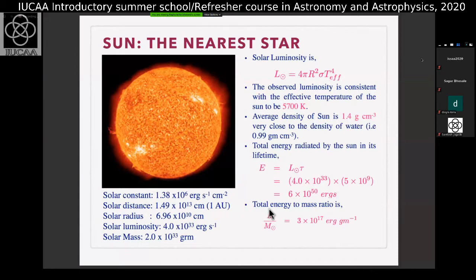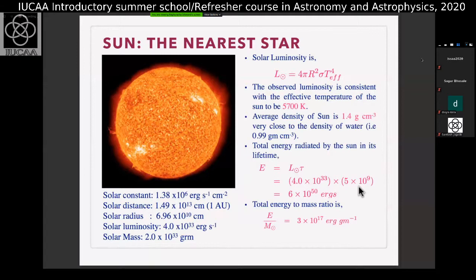The total energy to mass ratio — the amount of energy per unit mass of the Sun — will be of the order of 3 × 10^17 ergs per gram. We have used a characteristic time scale for a Sun-like star and we know what is the amount of energy per unit time it is emitting, so we know the total energy it will emit over that time. This must be related to the efficiency at which we can convert mass into energy.